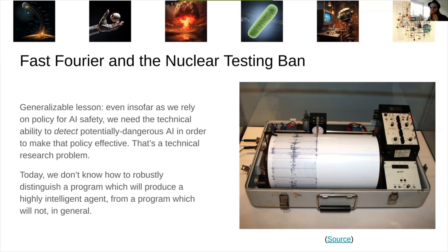The generalizable point here is that even if we want to rely on policy for AI safety, we need the technical ability to detect potentially dangerous problems. And that itself is a technical problem. Today, we don't have a robust way to distinguish a program which will produce a highly intelligent or potentially dangerous agent from a program which will not, which makes it really hard to regulate these things.